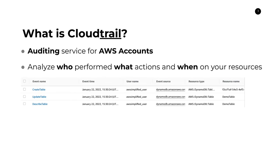Here's an example of a trail. We can see there are different events listed here — create table, update table, describe table. We see the different times in which these three things were executed, the username, the event source, the resource type, and the resource name. This is the idea with CloudTrail: it allows you to have an audit log of all the events that are related to your AWS applications — basically everything that every user signing into your AWS account is doing, when they're doing it, and what they are doing it to. This is the main purpose of CloudTrail — not meant for applications, but meant for auditing your AWS accounts.